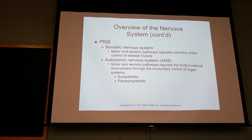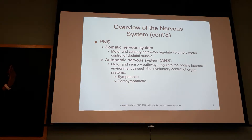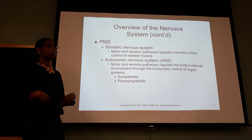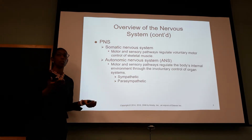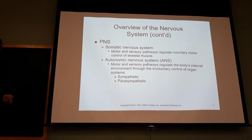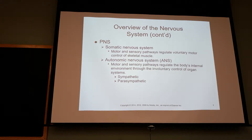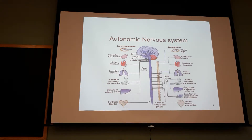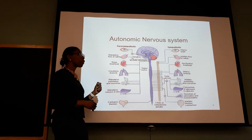The autonomic nervous system — we don't have to think about it; it just happens. I don't have to say 'beat, heart' — it beats. I don't have to initiate peristalsis; it happens automatically. That's your autonomic nervous system. It's your sympathetic and your parasympathetic nervous system. Your sympathetic nervous system is your fight or flight. Your parasympathetic nervous system is your rest and digest. This is what was designed to protect us.